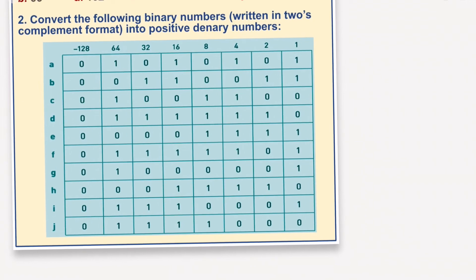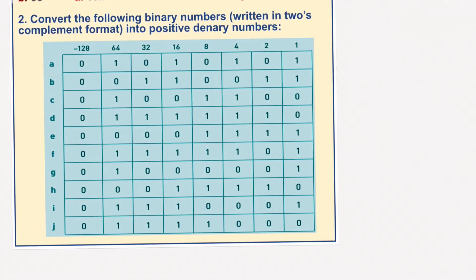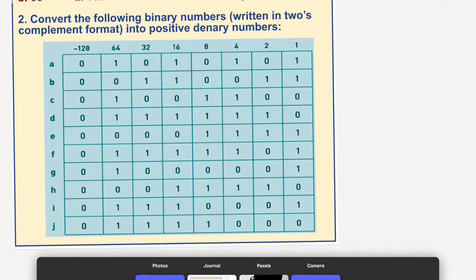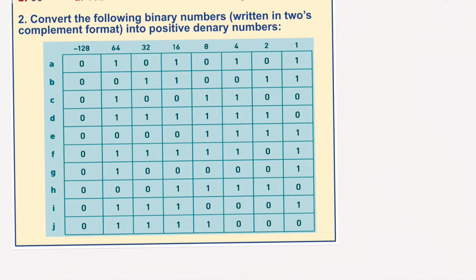So, convert the following binary numbers written in 2's complement into a positive denary format. You can see that all of these have a zero in the most significant bit and are not going to turn any numbers into negative numbers. That's what this is about.